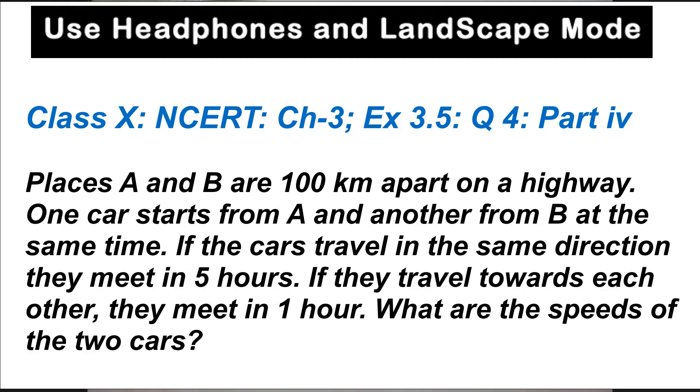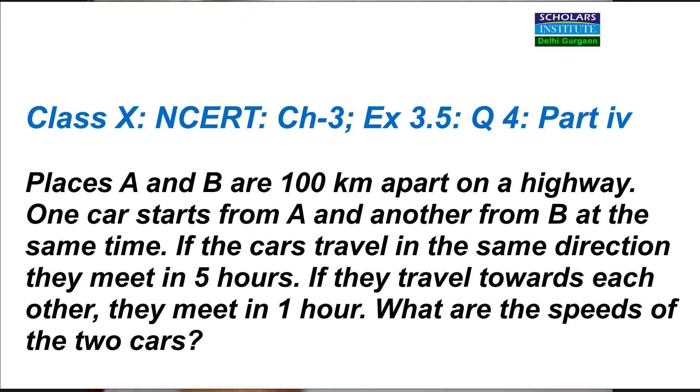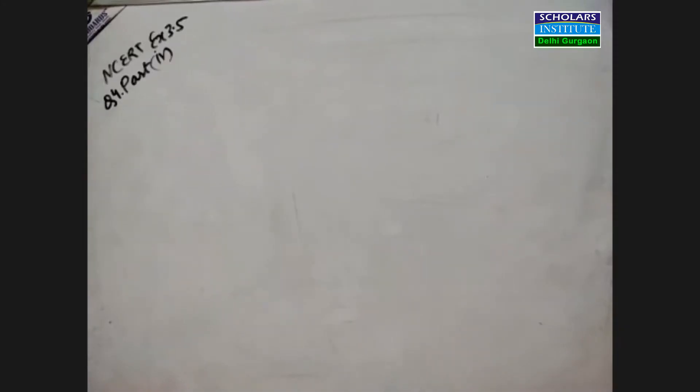This is Chapter 3, Exercise 3.5, Part 4, Question 4 from NCERT. The question states: Places A and B are 100 kilometers apart on a highway. One car starts from A and another from B at the same time. If the cars travel in the same direction they meet in 5 hours. If they travel towards each other, they meet in 1 hour. What are the speeds of the two cars?